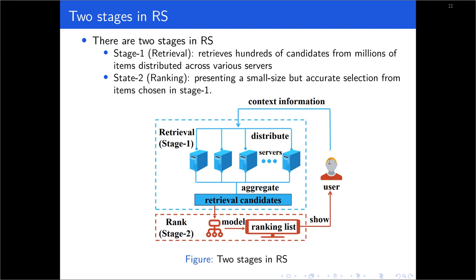Generally, modern industrial recommender systems have two-stage pipelines. In stage one, also named the Retrieval Stage, it retrieves hundreds of candidates from millions of item corpus, and these items are distributed across various servers. In stage two, the Ranking Stage, it presents a small but accurate selection from the items chosen in stage one, normally choosing 10 or 20 items to expose to users.